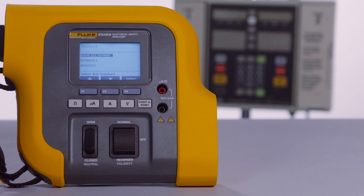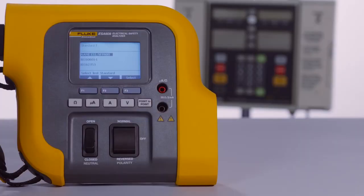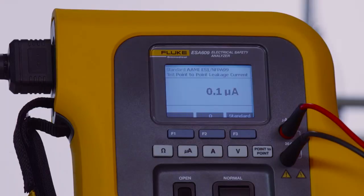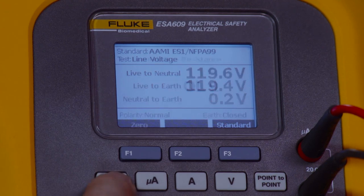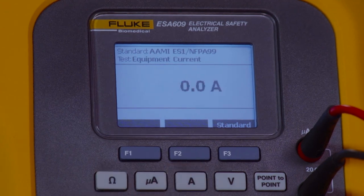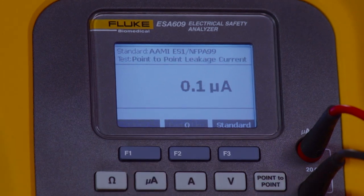Let's take a closer look at its basic testing capabilities. The ESA609 integrates all functions needed to test medical devices when patient lead testing is not required, including line voltage or mains, ground wire resistance or protective earth, equipment current, leakage current, and point-to-point tests.